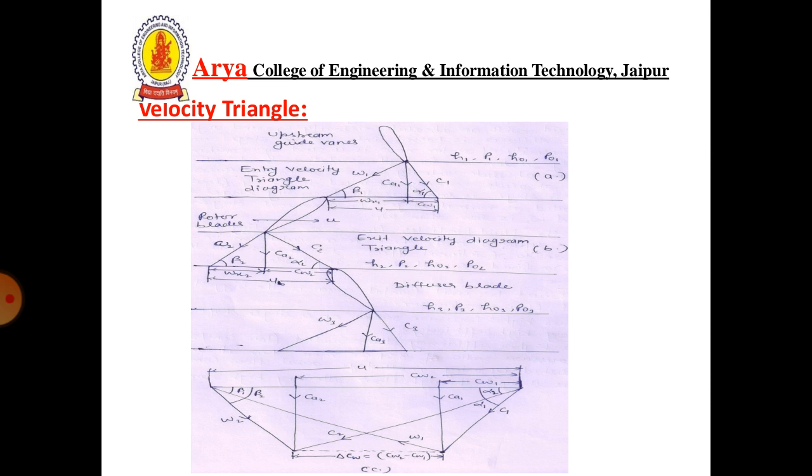At exit, we have velocities C2, Ca2, and W2. Wx1 is the whirl component of flow velocity at inlet, and Wx2 at outlet. U is the impeller tip velocity in terms of RPM, which remains constant. Figure C shows the combination of inlet and outlet velocity triangles.